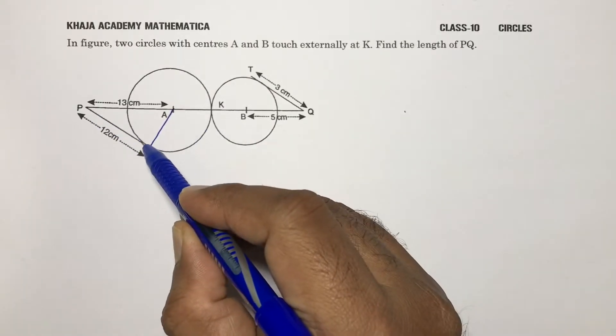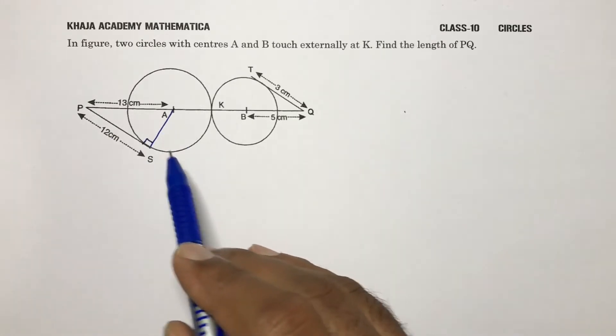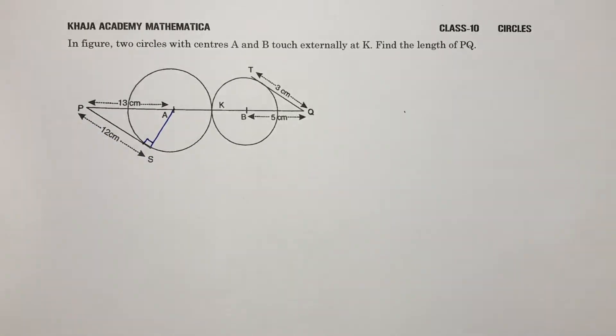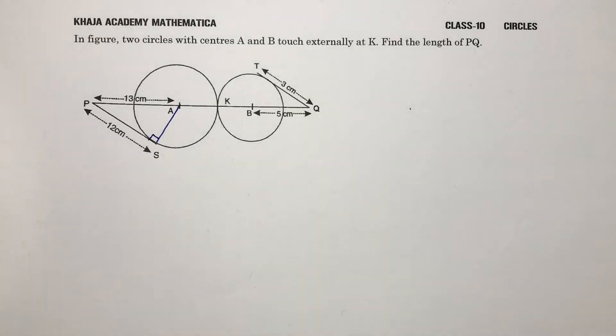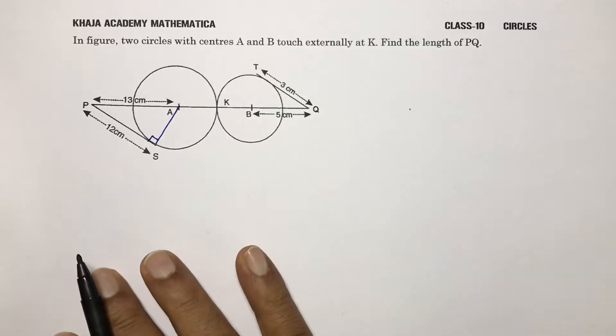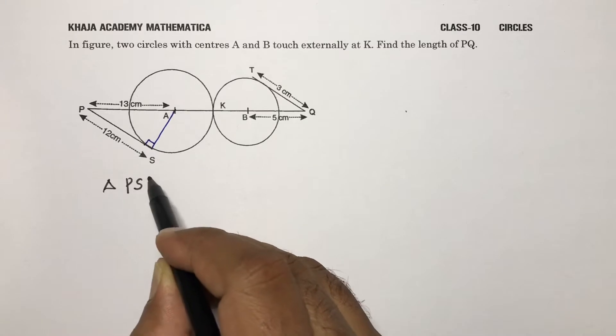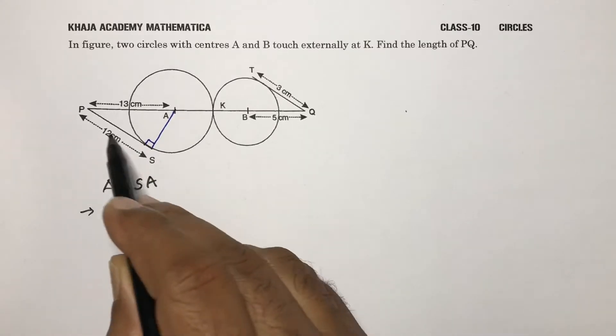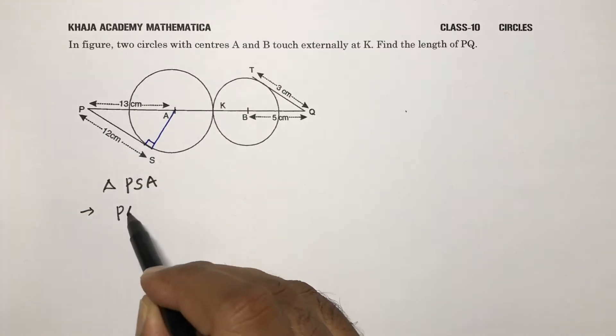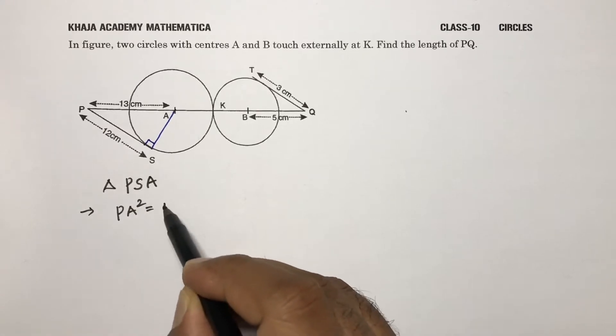The angle between radius and tangent is 90 degrees. So in triangle PSA, I'll apply Pythagorean theorem. With the help of Pythagorean theorem, the hypotenuse is PA square equals PS square plus SA square.